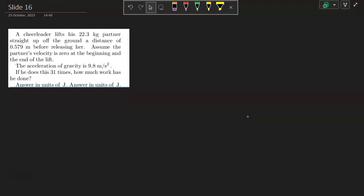He does work against the force of gravity, so the work he does gives the cheerleader potential energy. So the work he does will be the cheerleader's mass times gravitational acceleration times the height times the total number of times he does this, n, where n is the number of times he lifts her.